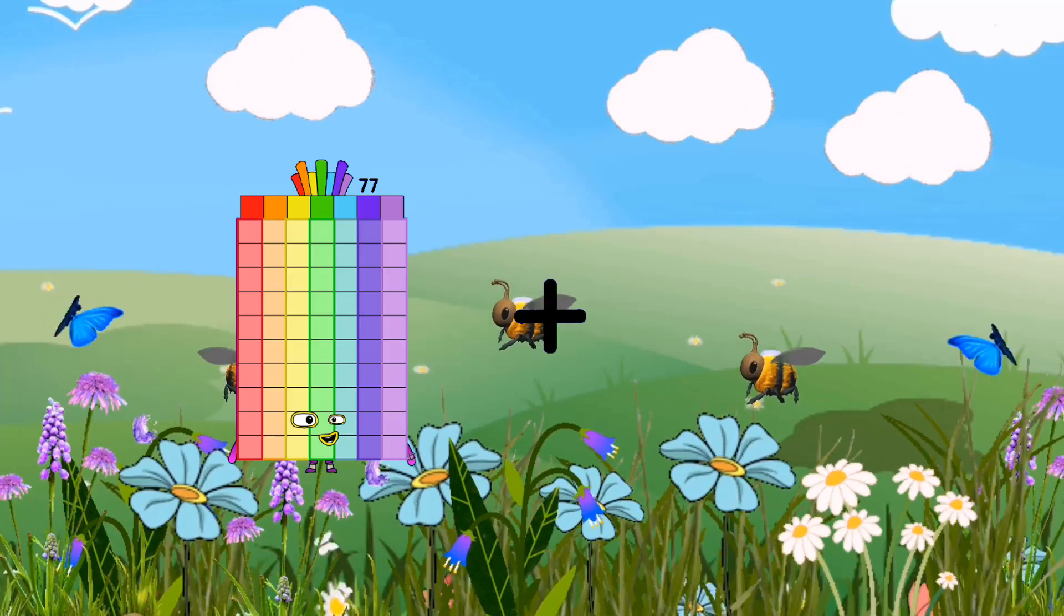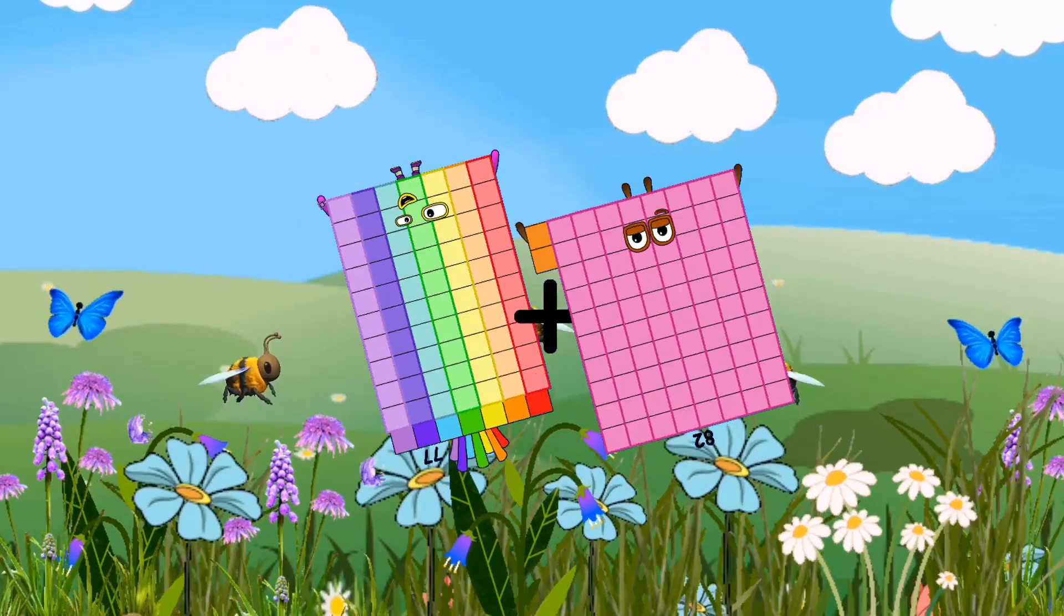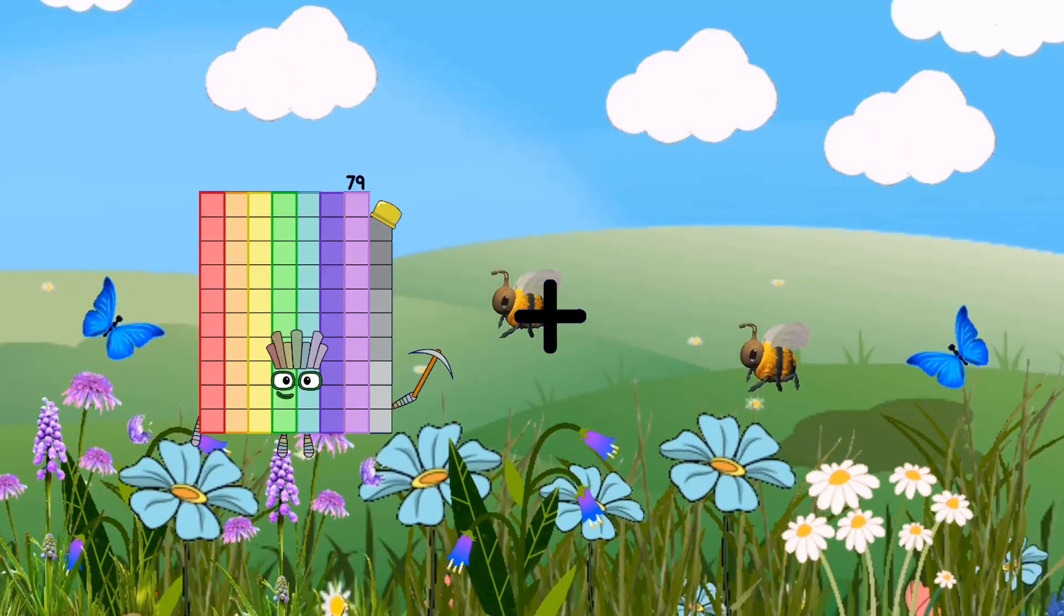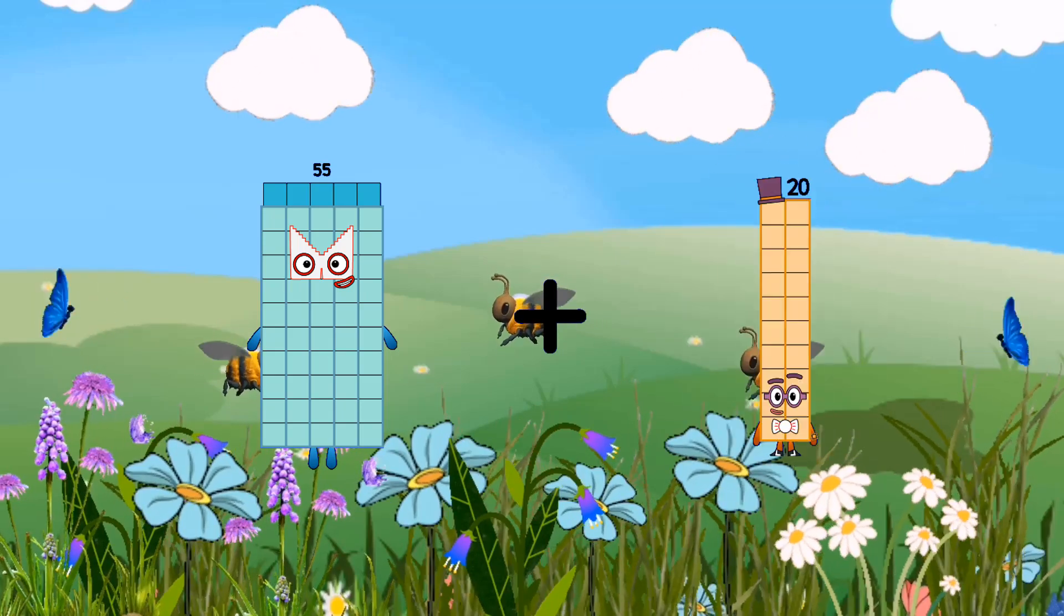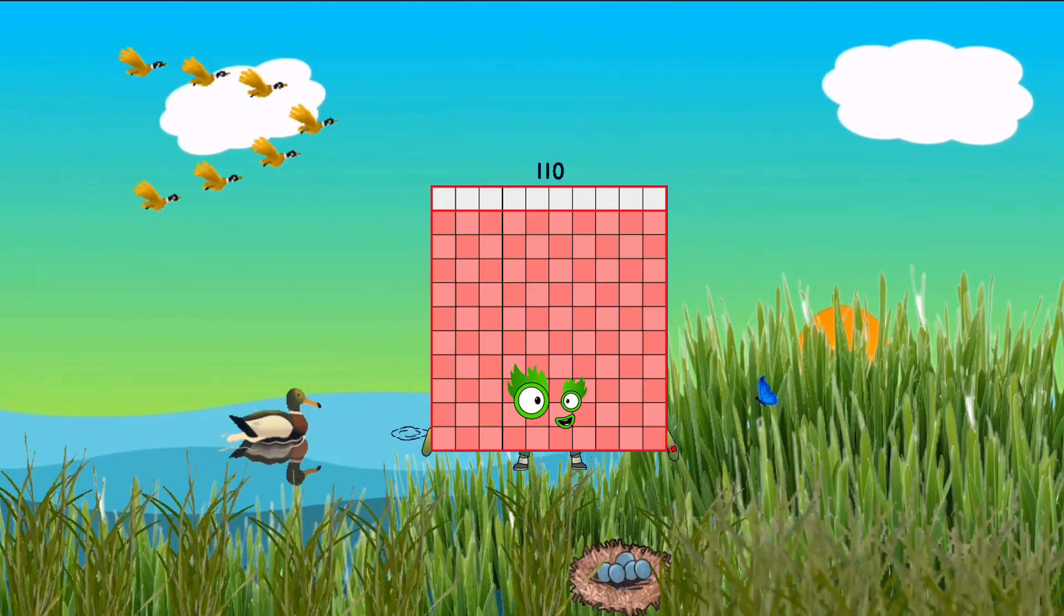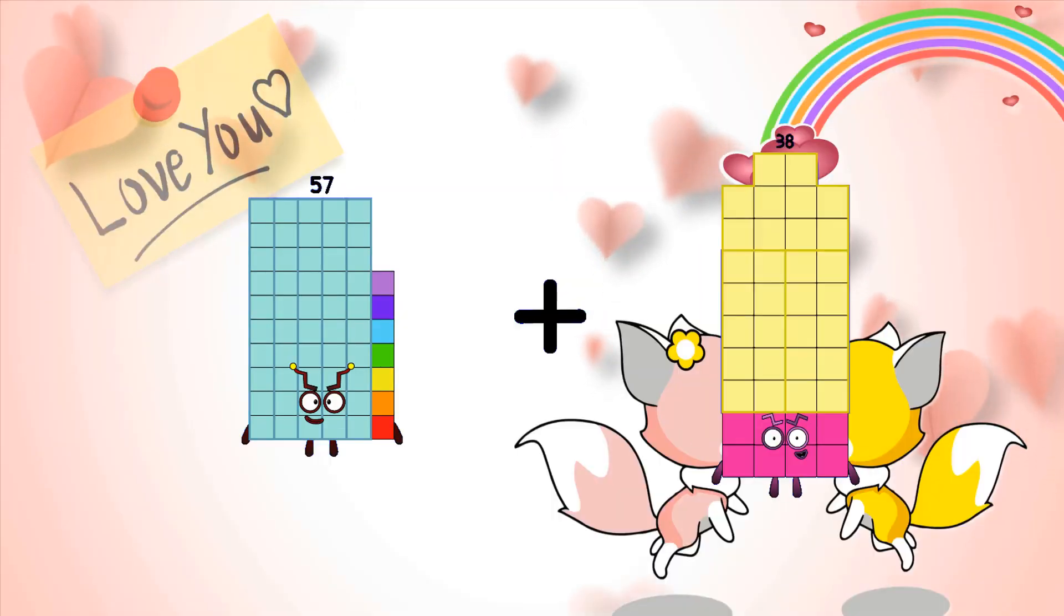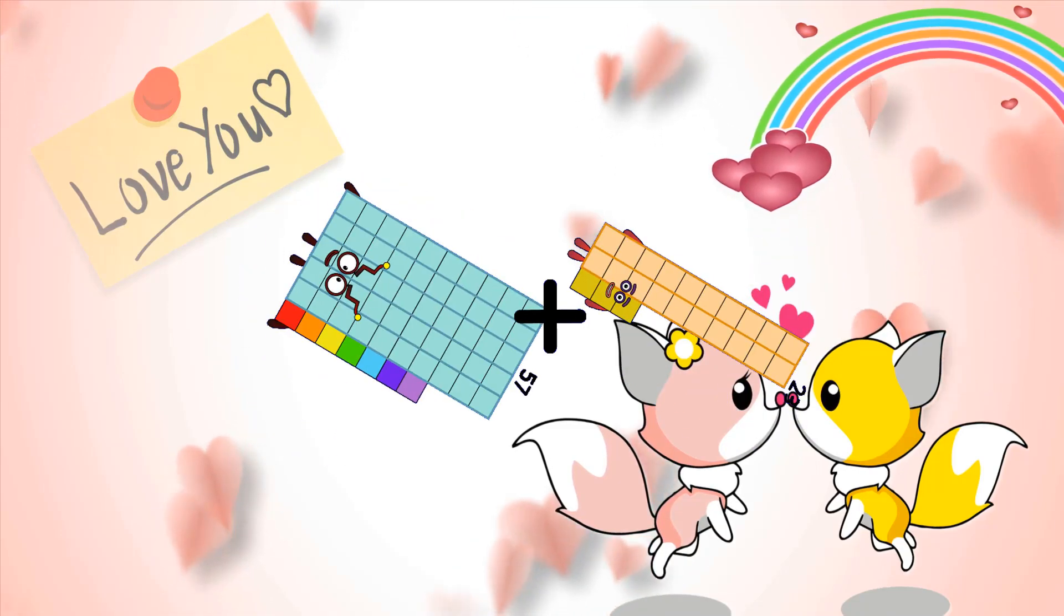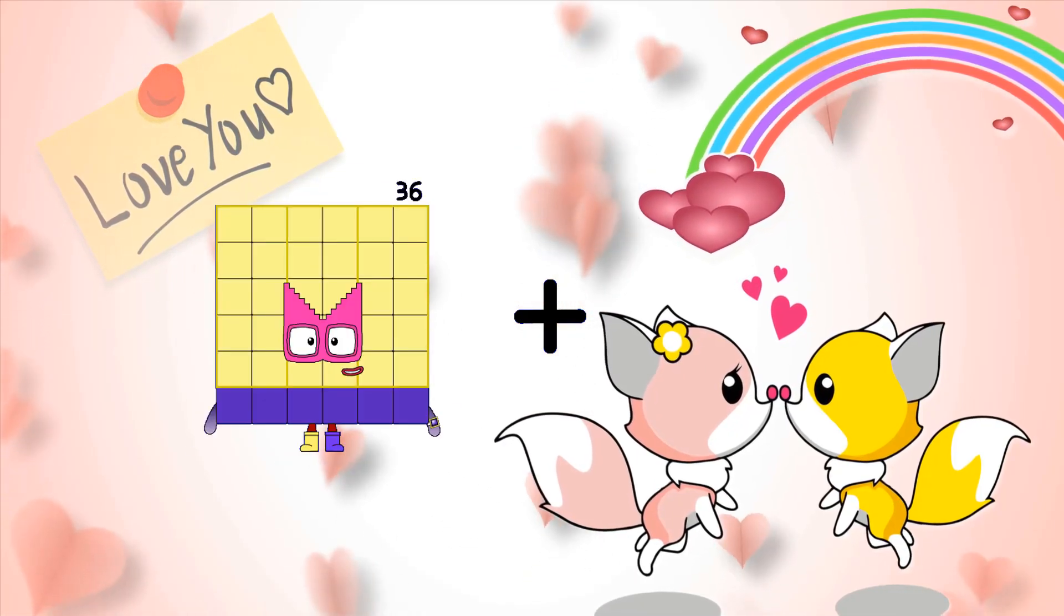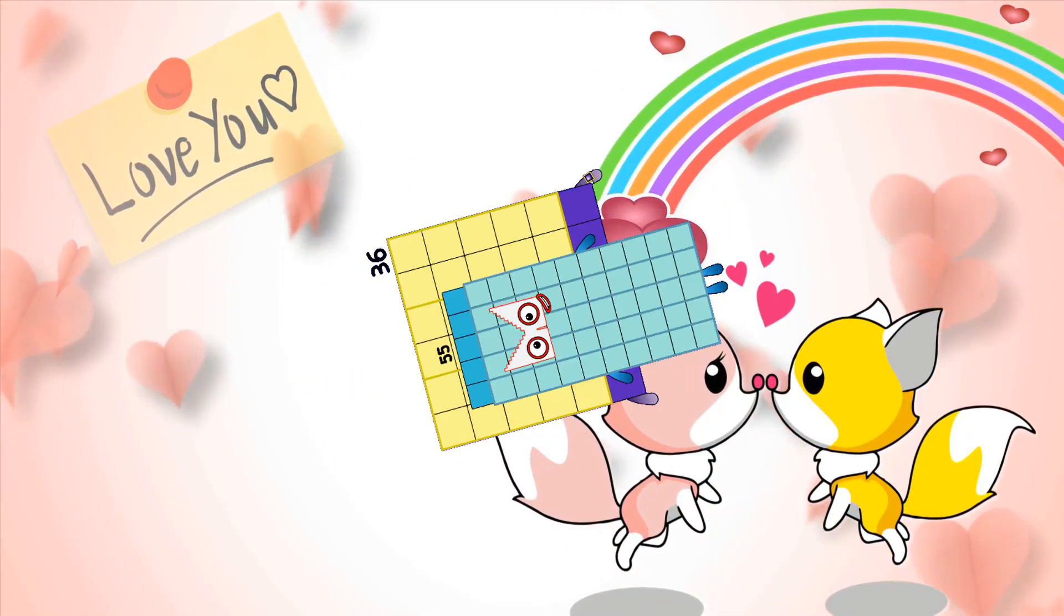77 plus 82 equals 159, 55 plus 55 equals 110, 57 plus 23 equals 80, 36 plus 55 equals 91.